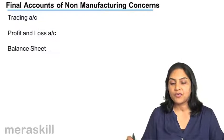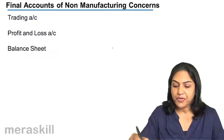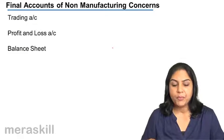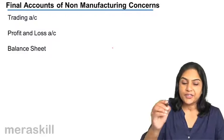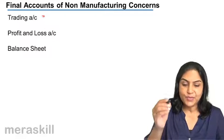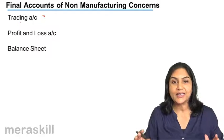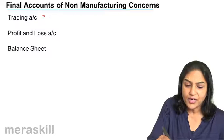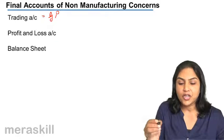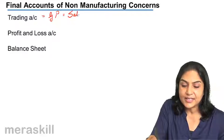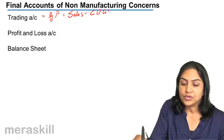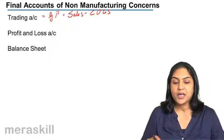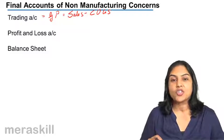The final accounts of trading concerns or non-manufacturing concerns consist of a trading account, a profit and loss account, and a balance sheet. The trading account gives us what is called the gross profit. Gross profit is nothing but sales minus the cost of goods sold. The trading account is prepared to ascertain the gross profit, which is sales minus the cost of goods sold.